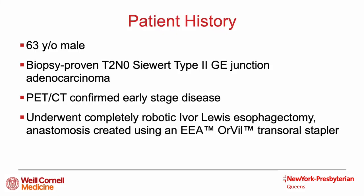The patient is a 63-year-old male, otherwise healthy, never smoker, who complained of epigastric pain for 2-3 months and underwent outpatient EGD and EUS, showing a small ulceration in the cardia adjacent to the GE junction. Pathology from biopsy showed a T2N0 moderately differentiated adenocarcinoma, and PET-CT confirmed early-stage disease. The patient elected to undergo a completely robotic Ivor-Lewis esophagectomy, which had an uneventful intraoperative course.